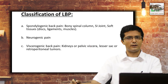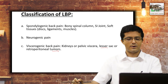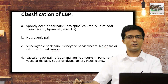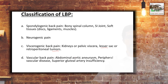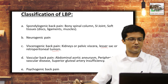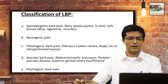Viscerogenic back pain from kidney or pelvic viscera pathology, lesions of the lesser sac, or retroperitoneal tumors must be ruled out clinically. Vascular back pain — especially aortic aneurysm associated with peripheral vascular disease — can mimic spondylogenic back pain because it presents with back pain and leg pain; this is ruled out by careful examination of distal arterial pulses. Superior gluteal artery insufficiency can also cause buttock pain confused with spondylogenic back pain. Spondylogenic back pain forms the majority of low back pain causes; psychogenic back pain may also be present.